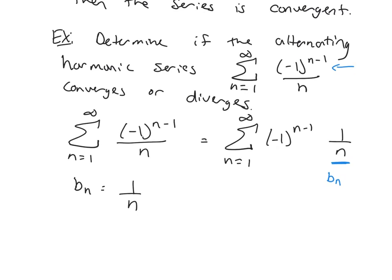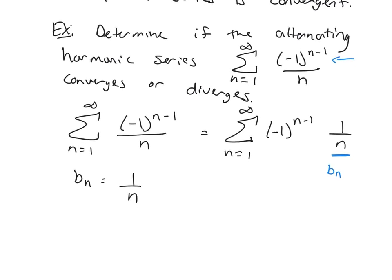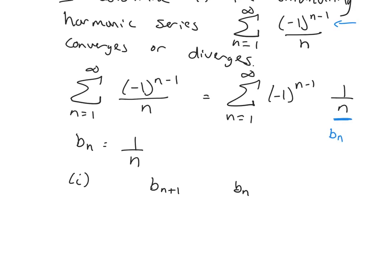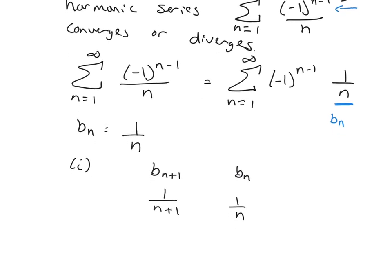So the first one says I've got to check that the B sub n's are decreasing. So for part 1, what I need to do is I need to compare B sub n plus 1 with B sub n. So 1 over n plus 1 and 1 over n. Which one is larger? 1 over n. Again, if you're not sure, cross multiply and double check. If I cross multiply, I get n is less than n plus 1. And this is what I needed. I needed to show that the B sub n's are decreasing.